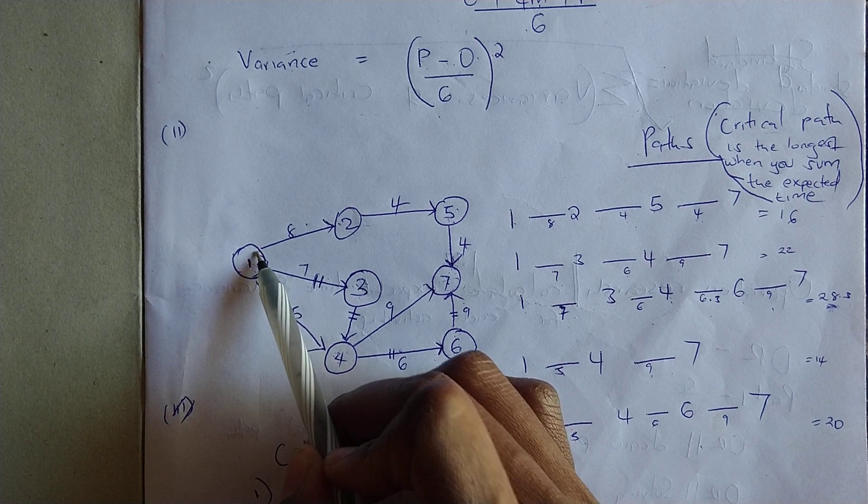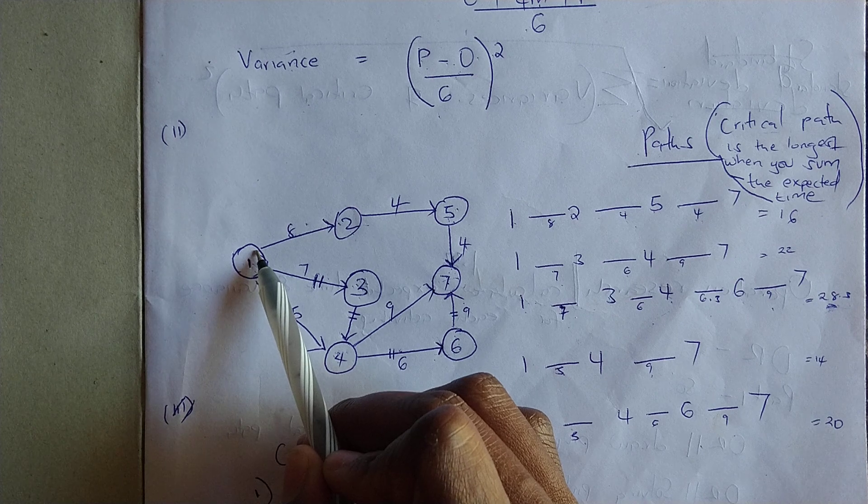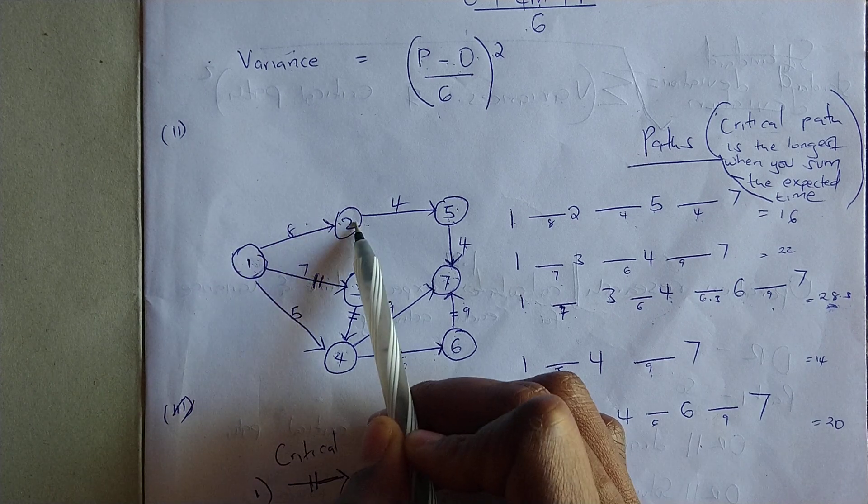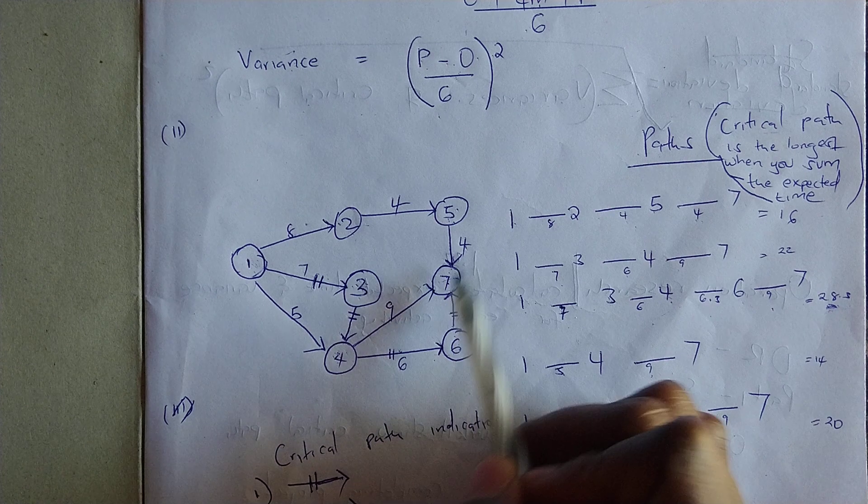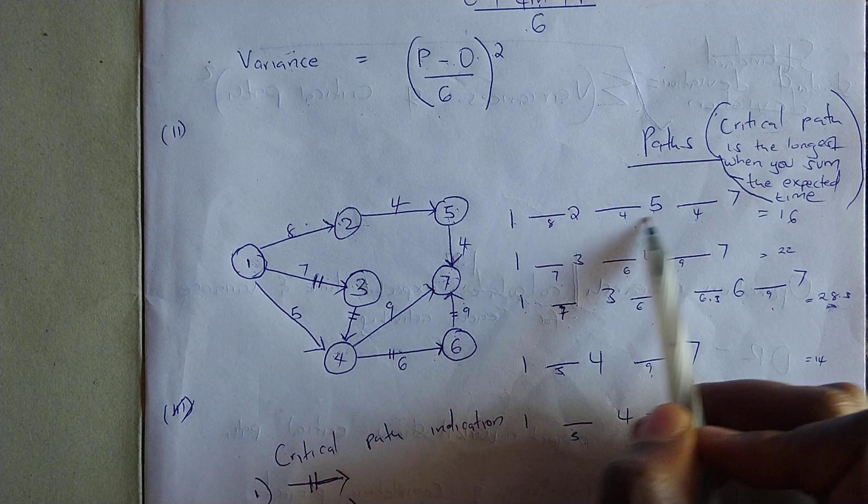This is one of the paths: from one to two, from two to five, and from five to seven. That is why I've indicated this path.